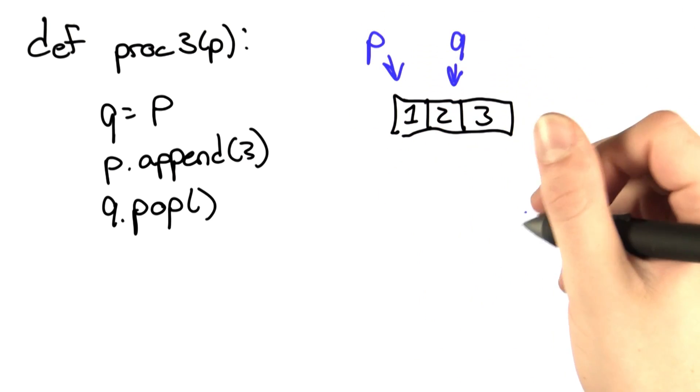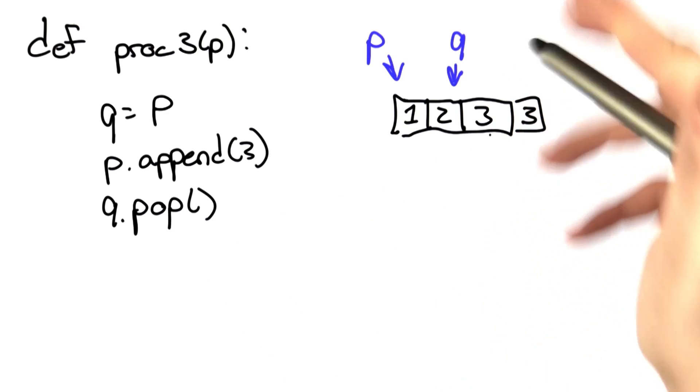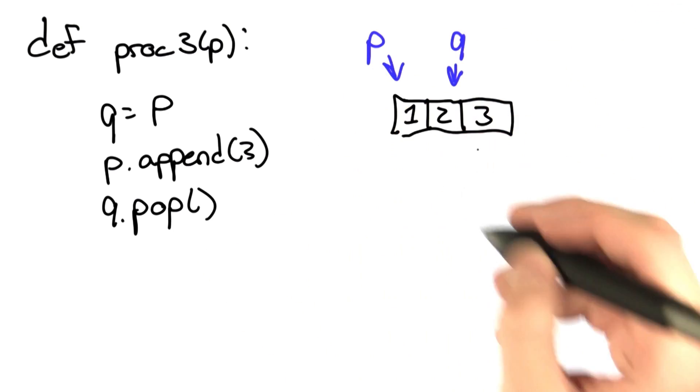On p, we append 3, and then on q, which is the same list, we pop 3. The end result is the same list we had before.